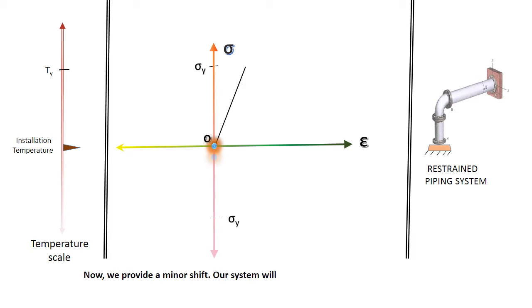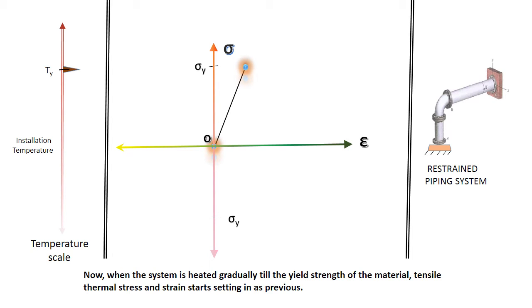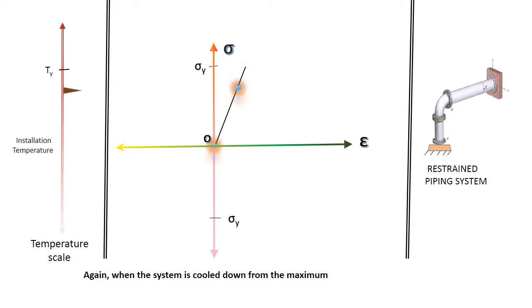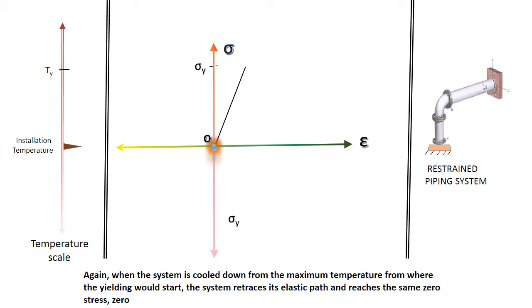Now we provide a minor shift. Our system will now be intended to be operated only at temperatures above the insulation temperature. In such case, let us again start afresh with zero stress and strain condition at the insulation temperature. Now when the system is heated gradually till the yield strength of the material, thermal stress and strain start setting in as previous. Again, when the system is cooled down from the maximum temperature from where the yielding will start, the system retraces the elastic part and reaches the same zero stress, zero strain state at insulation temperature.